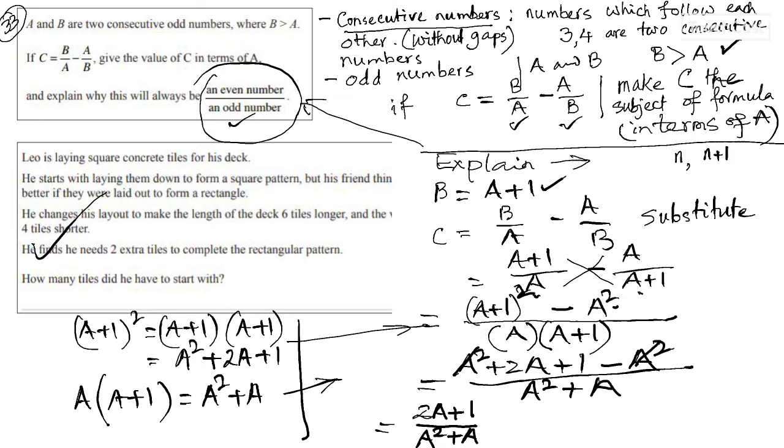Now, the two A squared cancels out. You are left with two A plus one over A squared plus A. So, I think we finally made C the subject of the formula. And on the right-hand side, there is no other variable but A. So, we have linked up C with A, and we made C the subject of the formula.